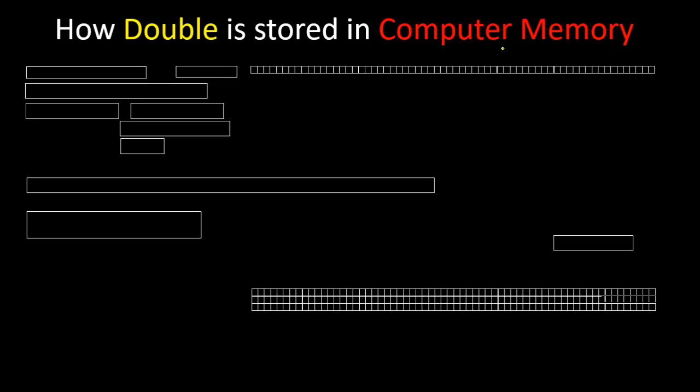To store a double number, the computer will allocate an 8 byte memory space. That means 64 bits.